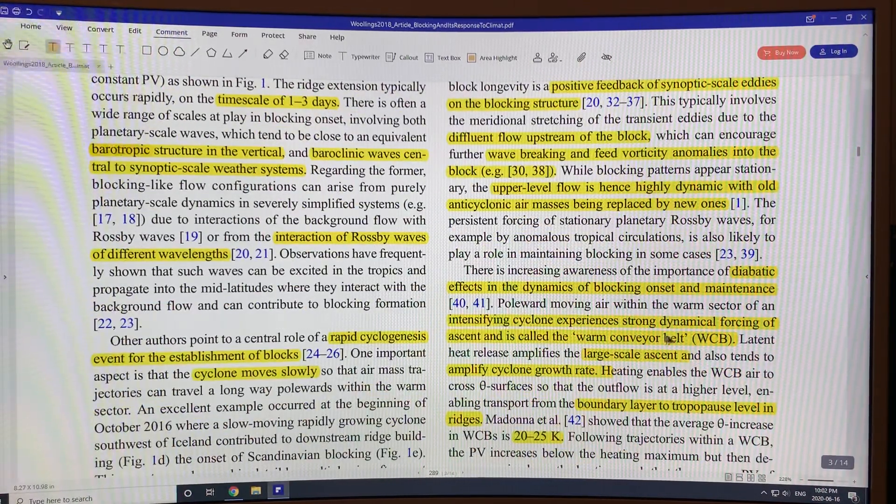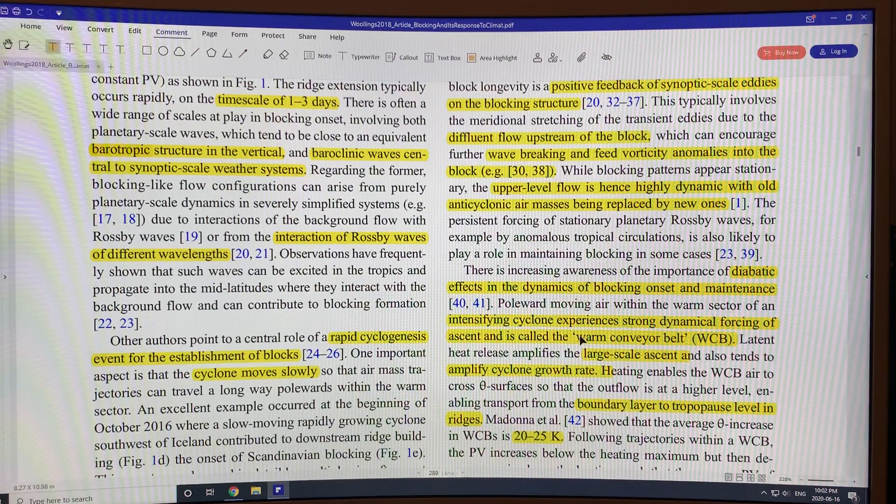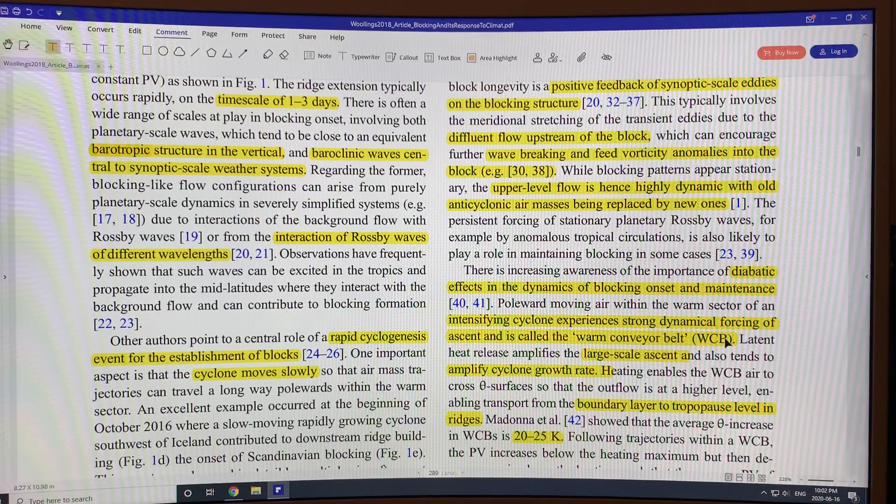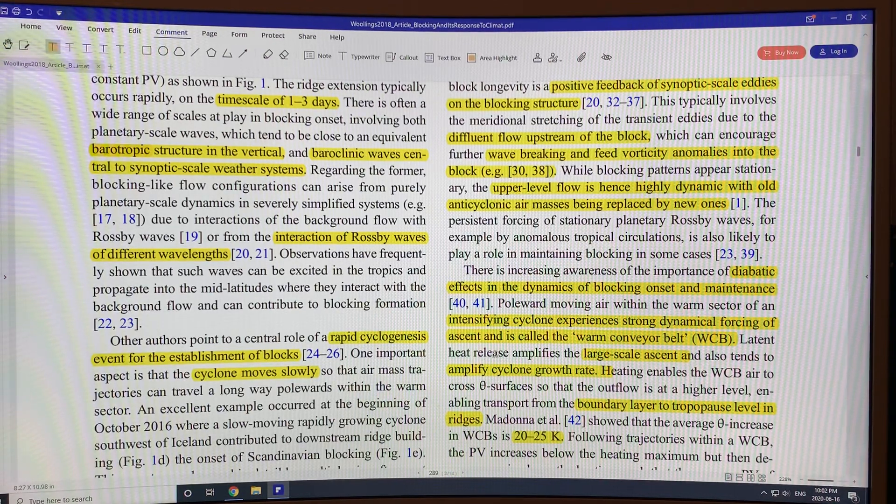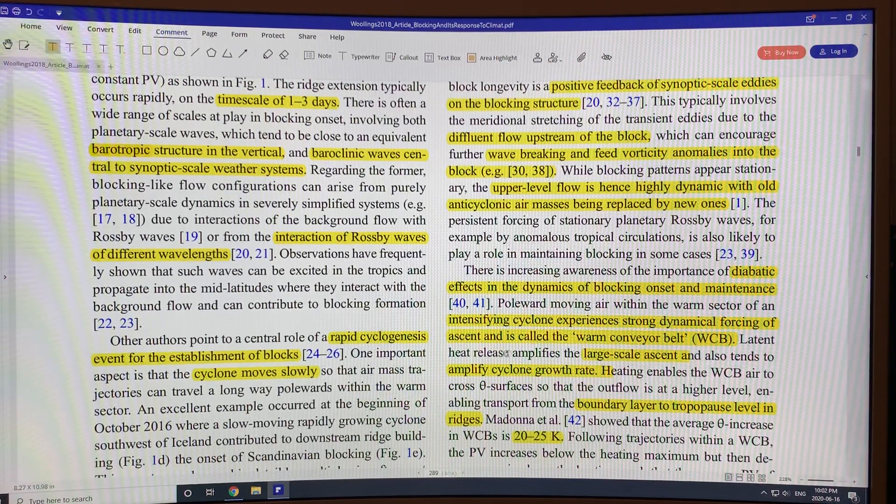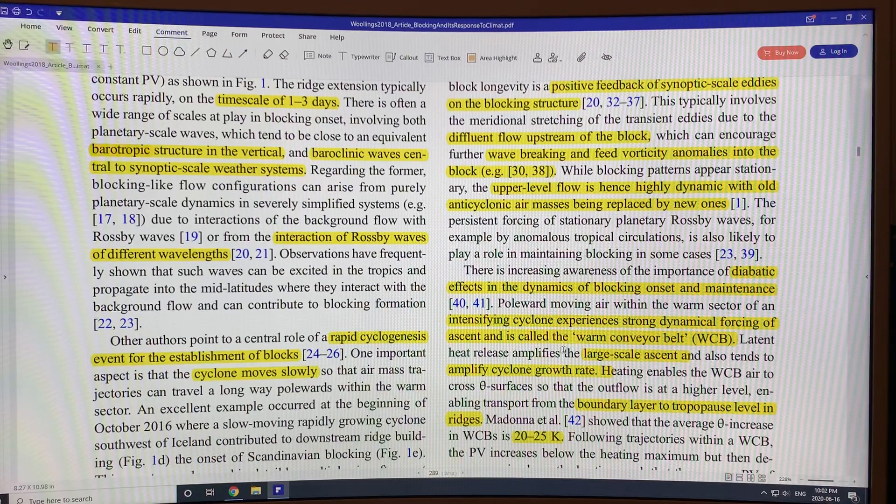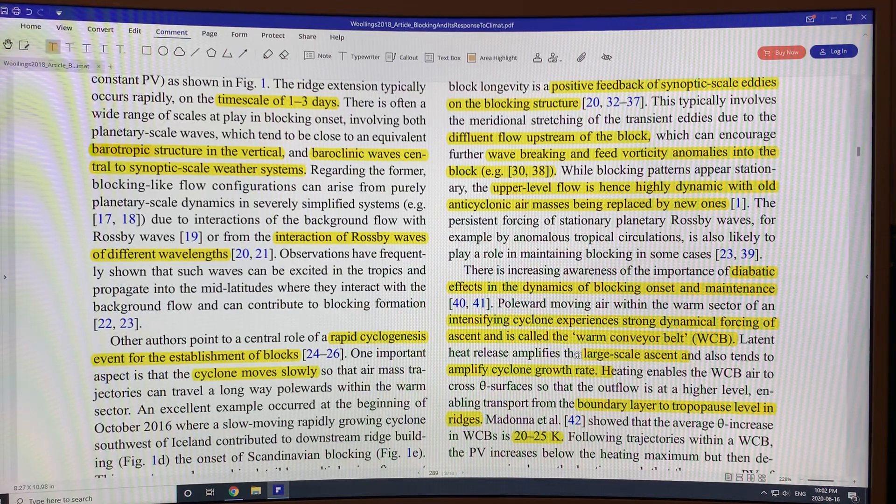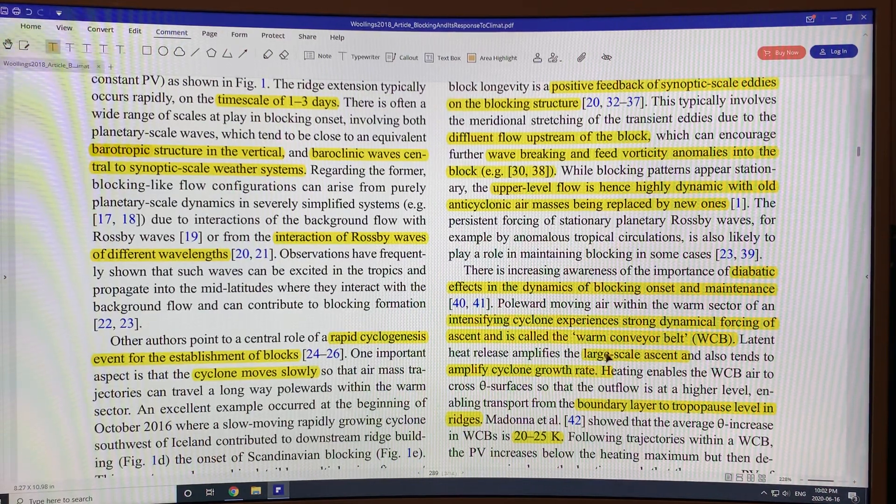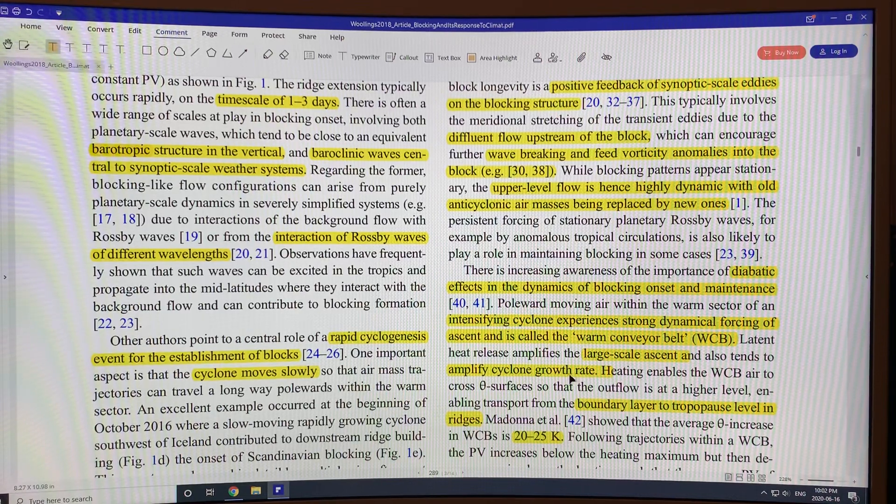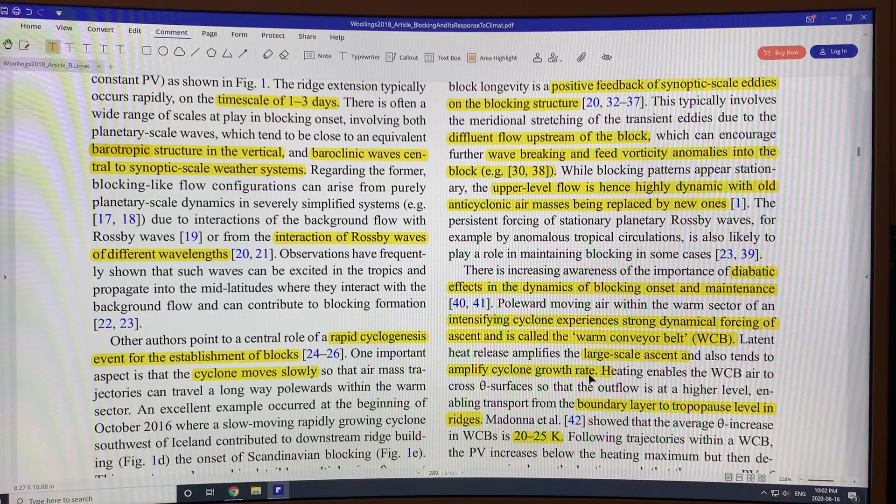So what happens is this warm air from further south that is humid goes into the ridge. And as the air rises, heat is released because you get condensation. The water vapor condenses out into droplets and it releases heat, and that heat keeps the thing ascending, going higher and higher, and it amplifies the cyclone growth rate.